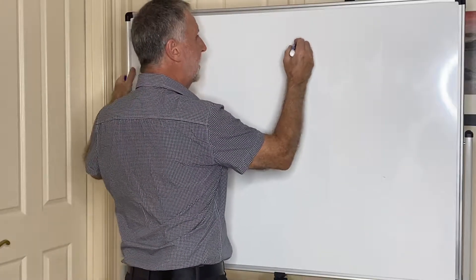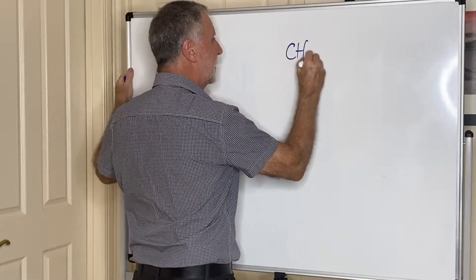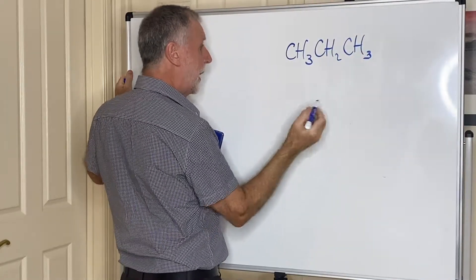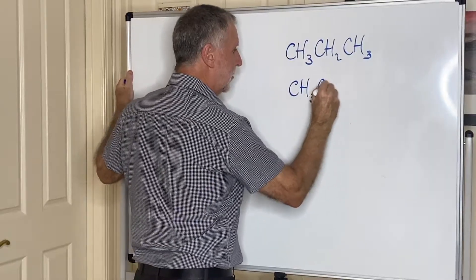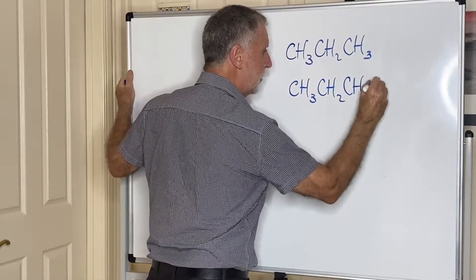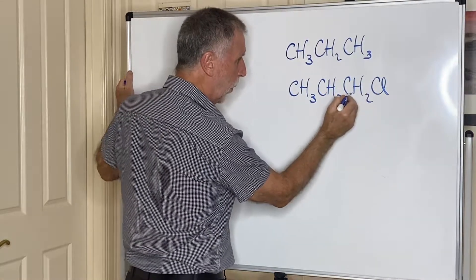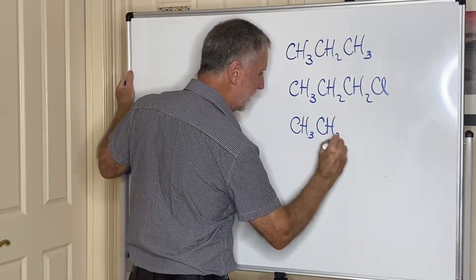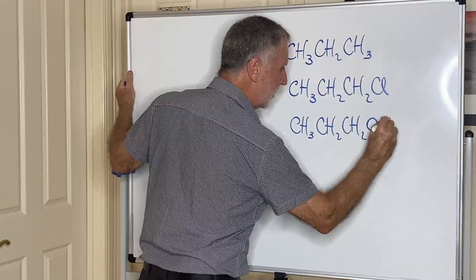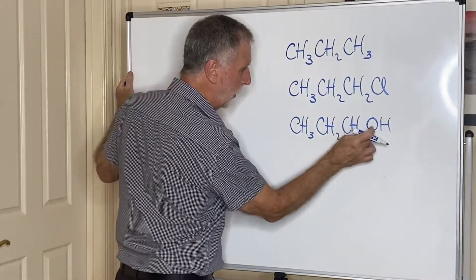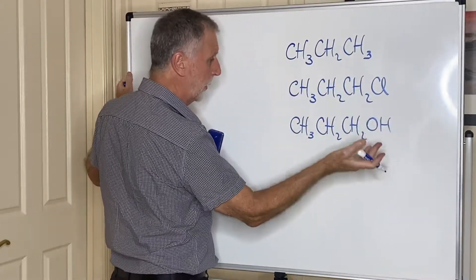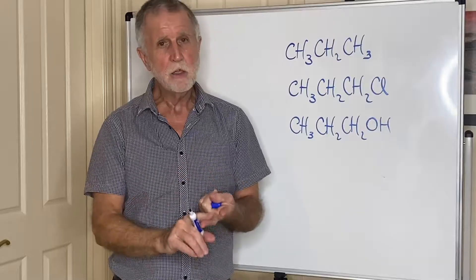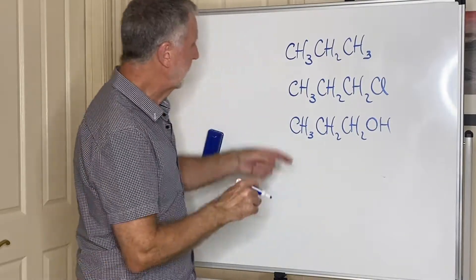So let's take three examples. Let's take an alkane like say propane CH3-CH2-CH3. Let's take a halo alkane like CH3-CH2-CH2-Cl, so that's 1-chloropropane. And then let's take an alcohol CH3-CH2-CH2-OH, and that would be propan-1-ol.